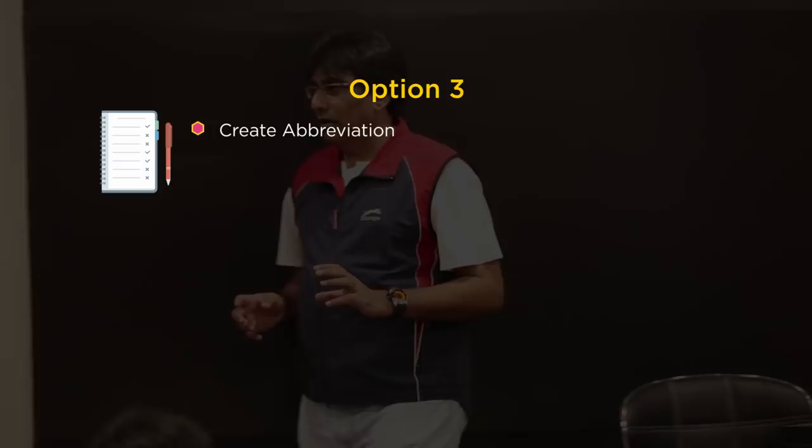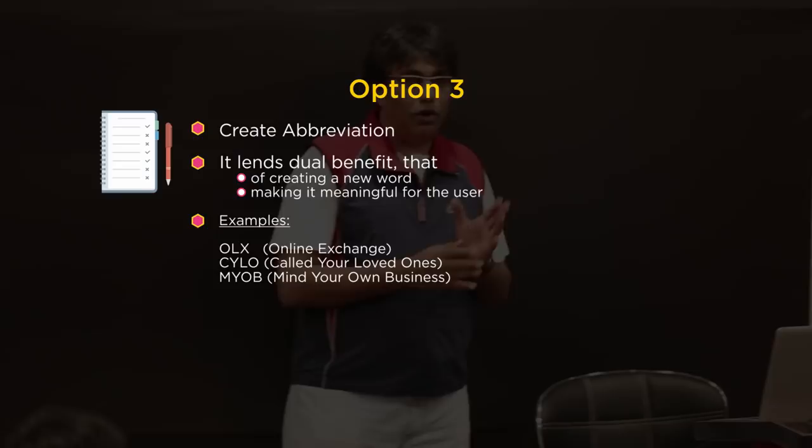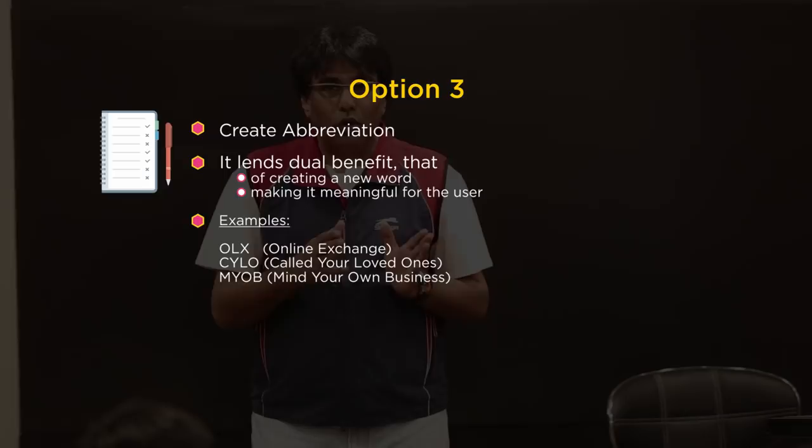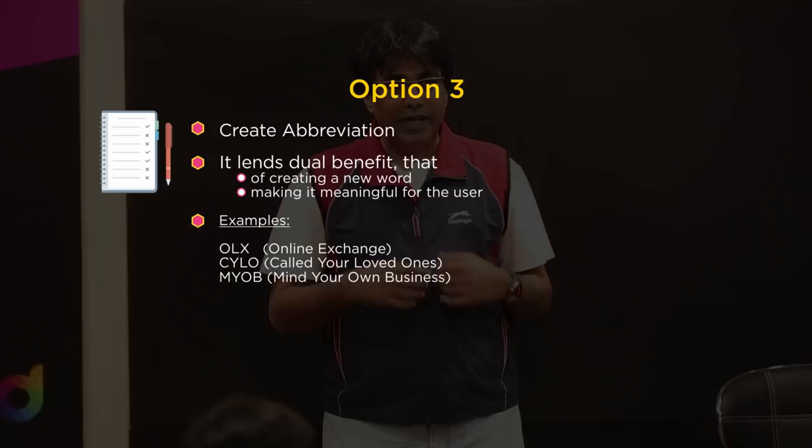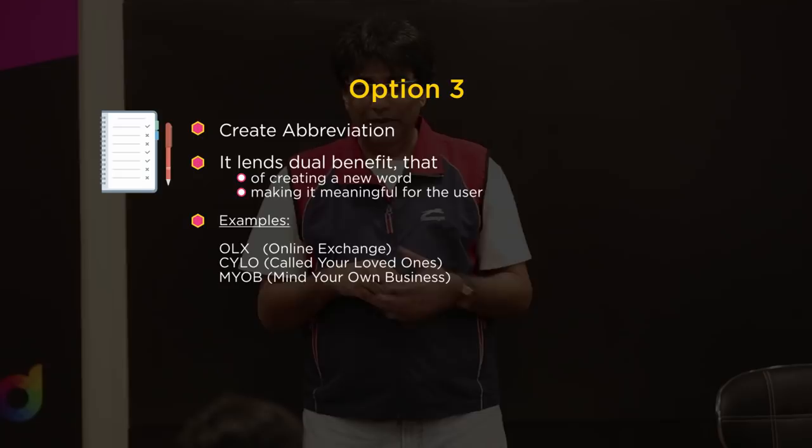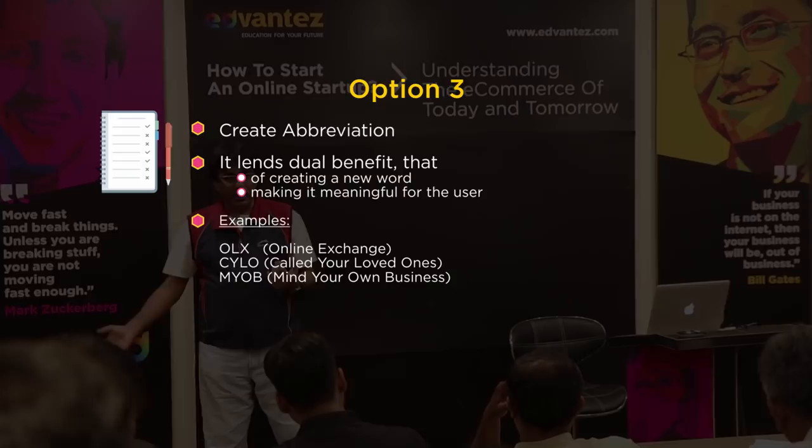Option three is: create an abbreviation. For example, OLX stands for Online Exchange. Or CYLO stands for Call Your Loved Ones. Or MYOB stands for Mind Your Own Business — and it is really a company. MYOB is one of the most popular accounting software in Australia and New Zealand, similar to what Tally is in India.